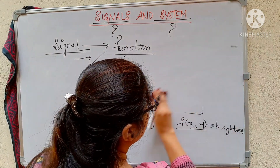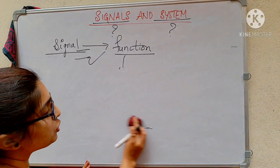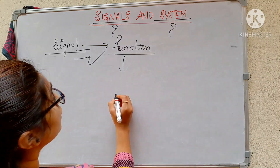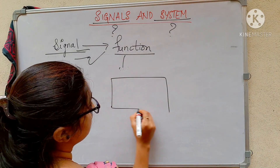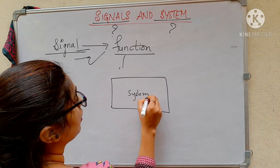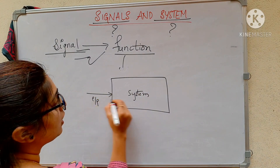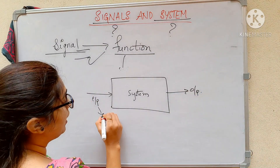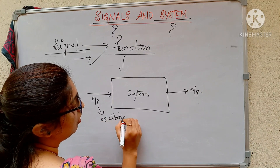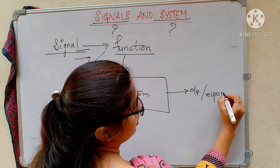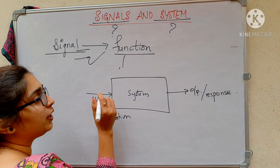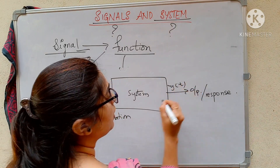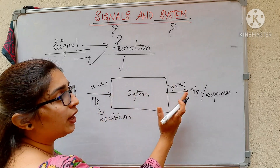So a signal is a function of one or more independent variables that conveys information. A system is something that transforms input to output — input is also called excitation, and output is also called response. If you give an input x(t), you will get output y(t). This is a system with one input and one output.